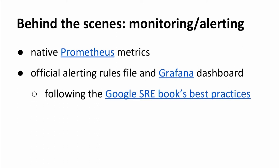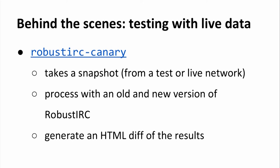For monitoring and alerting, RobustIRC is instrumented using native Prometheus metrics. We also ship a Prometheus alerting rules file and a Grafana dashboard definition. The rules file follows the Google SRE books best practices — if you haven't checked that out, it's a great resource and the link is on the slides, which I'll publish afterwards.